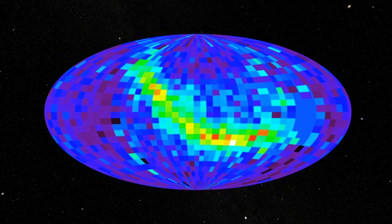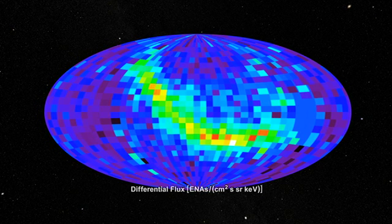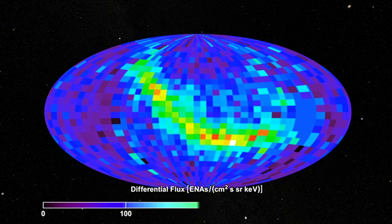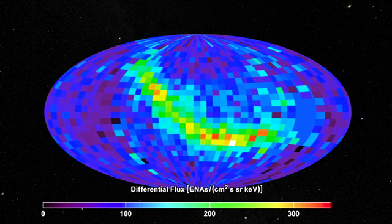The colors correspond to how many atoms hit the detector from a particular region. Violet represents few atoms, and the colors move up to red, which represents many atoms.